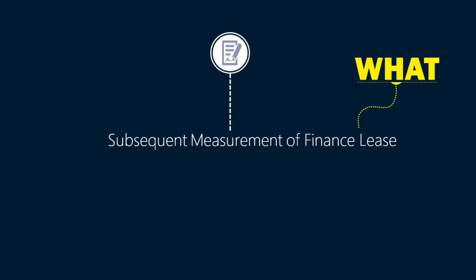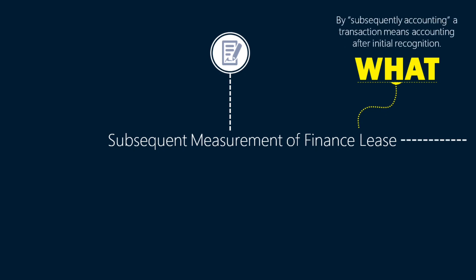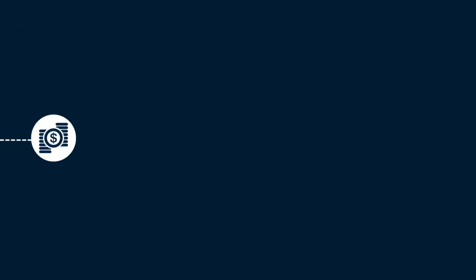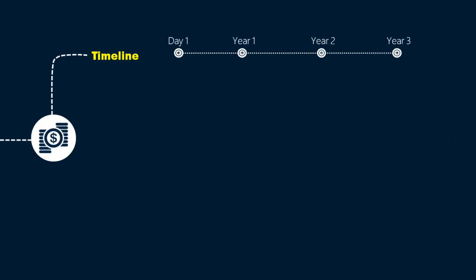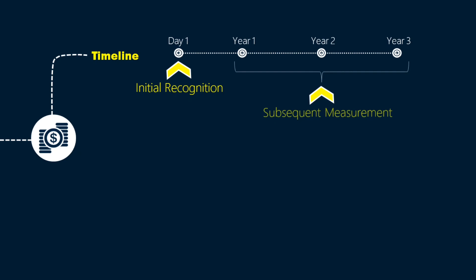What exactly do we mean by subsequent measurement of a lease transaction? Subsequently accounting a transaction means accounting after initial recognition. So if a lease contract spans 3 years, the accounting entry made on day 1 is the initial recognition, and whatever happens afterwards is the subsequent measurement.